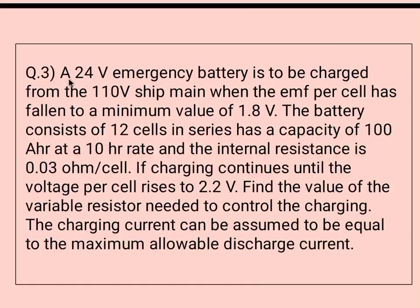A 24 volt emergency battery is to be charged from the 110 volt ship main. When the EMF per cell has fallen to a minimum value of 1.8 volt, the battery consists of 12 cells in series, has a capacity of 100 ampere-hour at a 10 hour rate, and the internal resistance is 0.03 ohm per cell. If charging continues until the voltage per cell rises to 2.2 volt, find the value of the variable resistor needed to control the charging current, assumed equal to the maximum allowable discharge current.